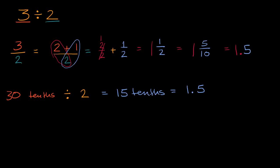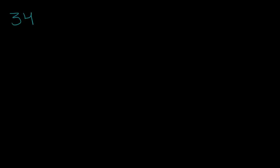Let's do another example. Let's figure out what 34 divided by four is. Pause this video and try to figure it out using some of the strategies we used. We could re-express this as a fraction: 34 divided by four, or 34 fourths. Four goes into 34 eight times, and you're going to have two left over. So this is eight and two fourths.